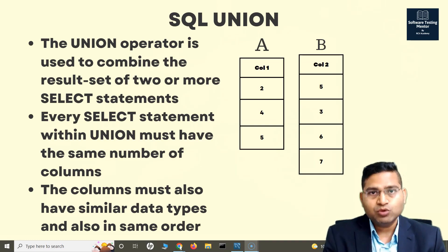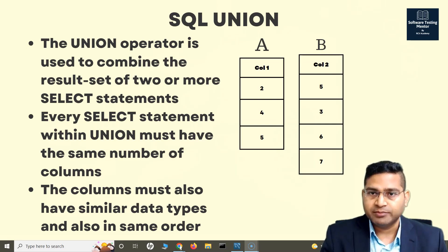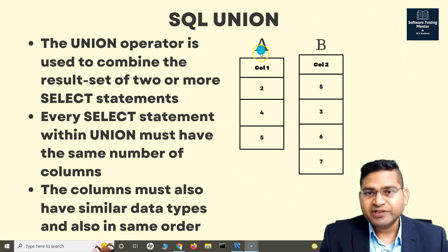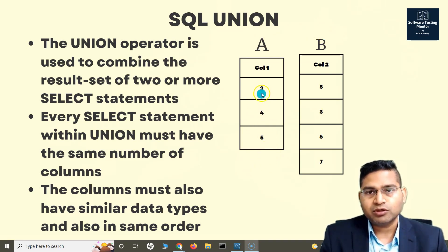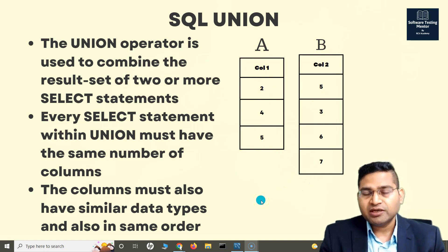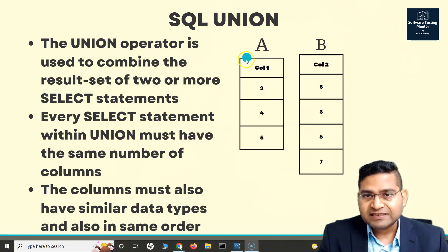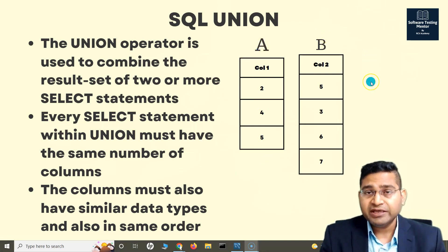So make sure when you are doing a UNION operator, the data type and the number of columns in the tables need to be the same, and UNION will combine the result set of two or more tables. In this case, table A and table B both have just one column with the same data type. So if I do a UNION of SELECT * FROM A and SELECT * FROM B, I can use the UNION operator to combine the results from both.